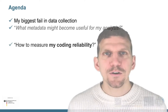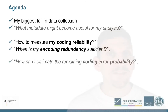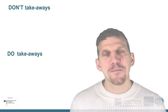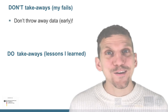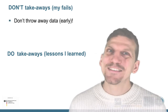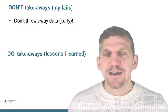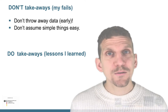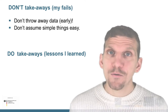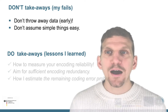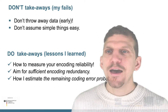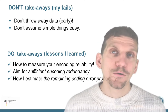Second, I'm going to talk about how to measure encoding reliability in several ways. These are the don'ts or takeaways I made from my experience: don't throw away data early — it sounds stupid, but I really did — and don't assume simple things are easy. Out of this phase we also developed some techniques: how to measure encoding reliability, how to aim for sufficient encoding redundancy, and how to estimate the remaining coding error probability.